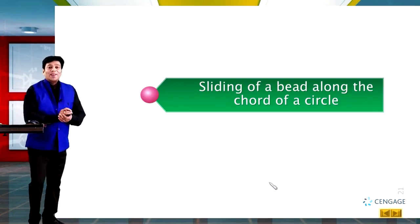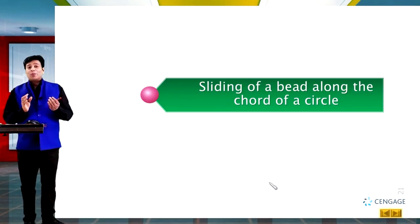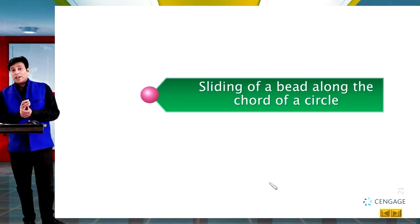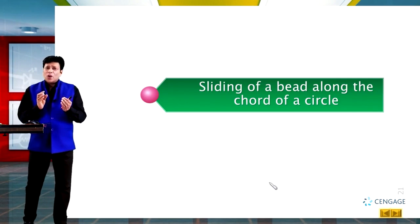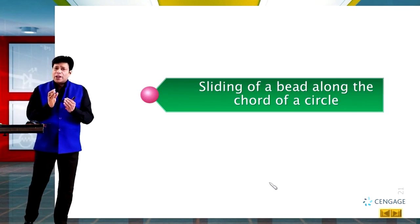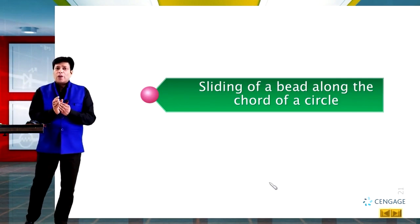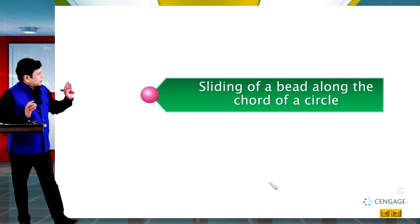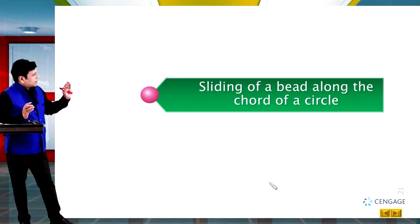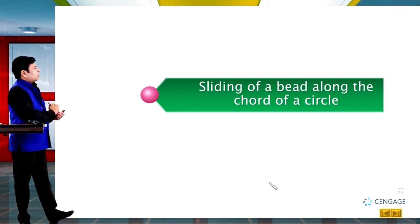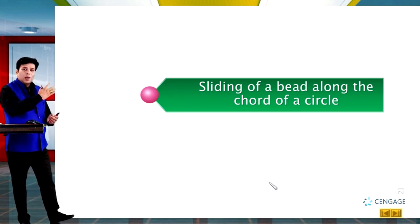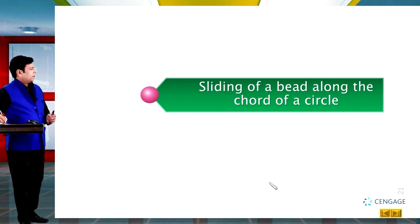Up to this point, we learned about motion of an object on an inclined plane moving along the line of greatest slope or any other direction. Now let us discuss one interesting case: the sliding of a bead along a chord of a circle placed in the vertical plane.